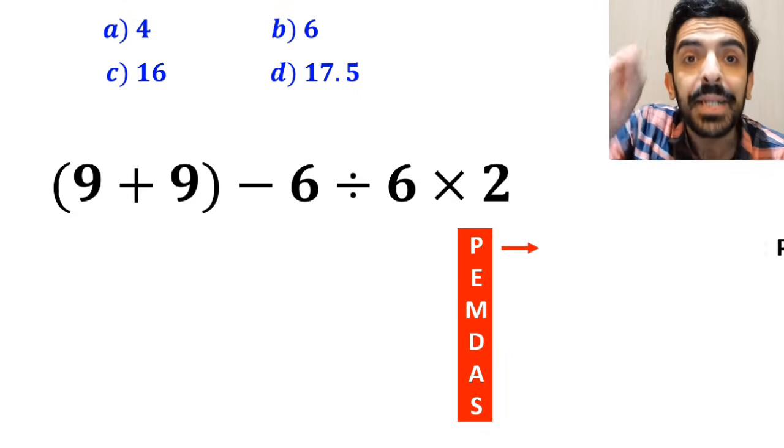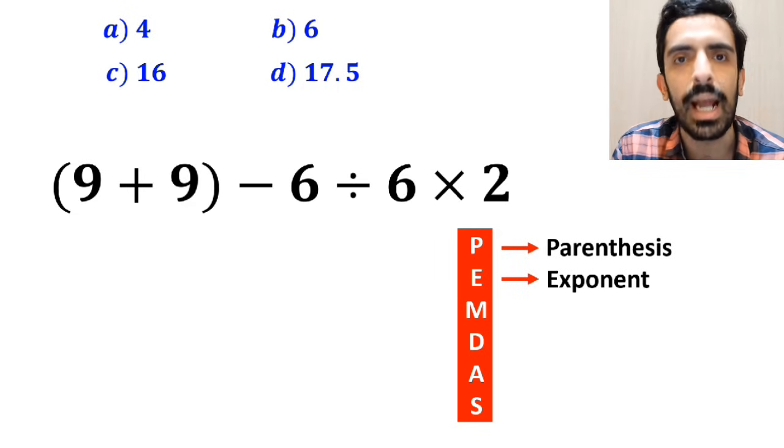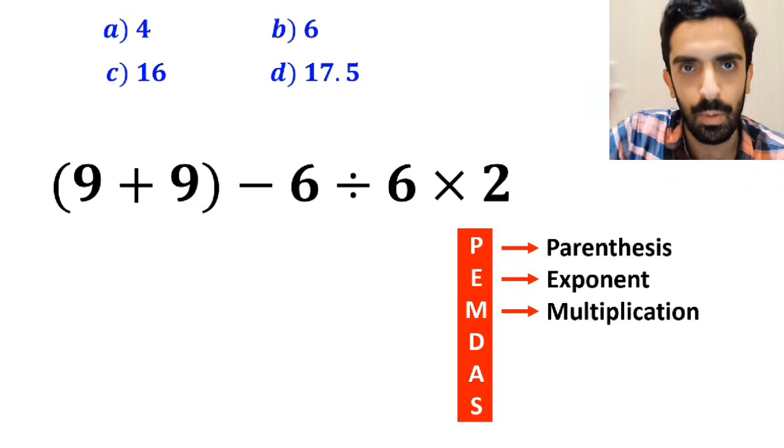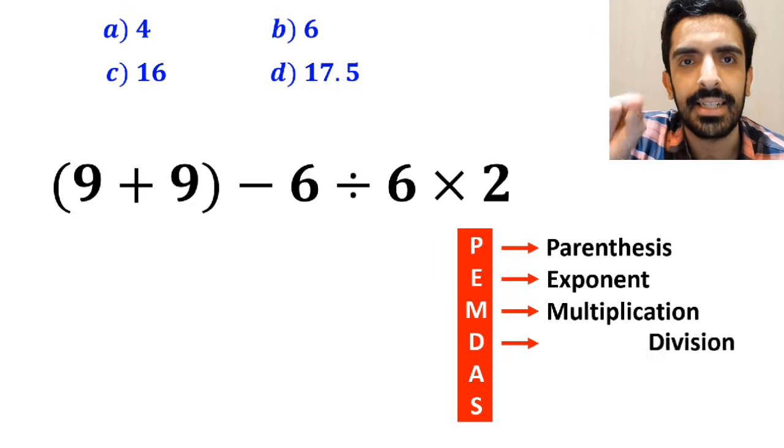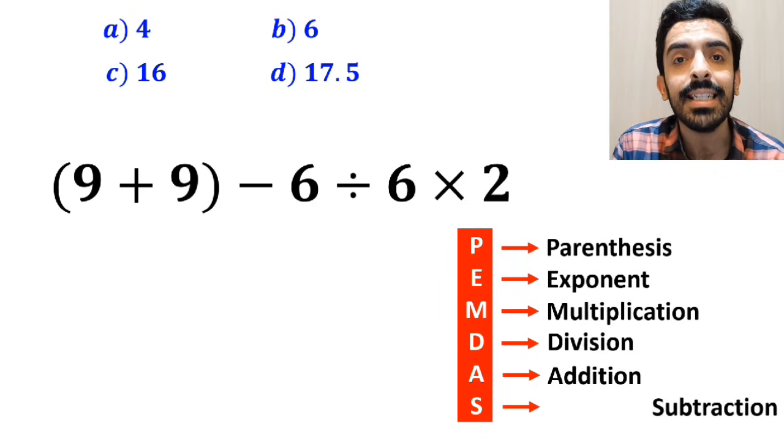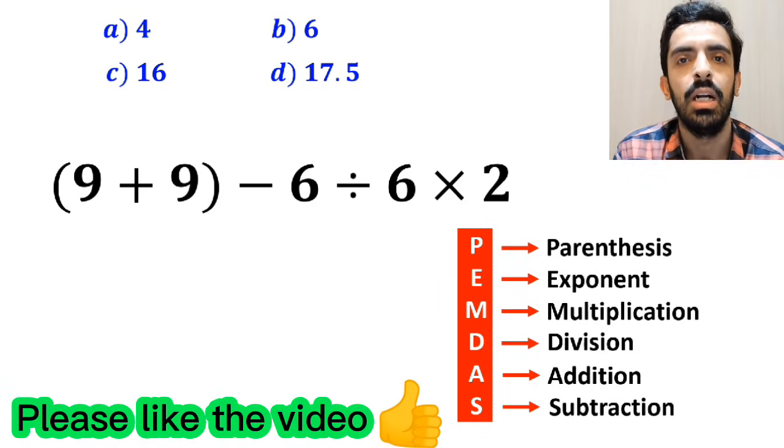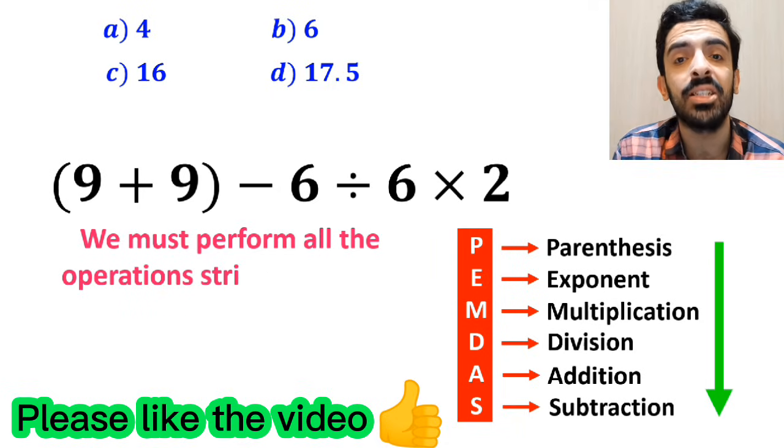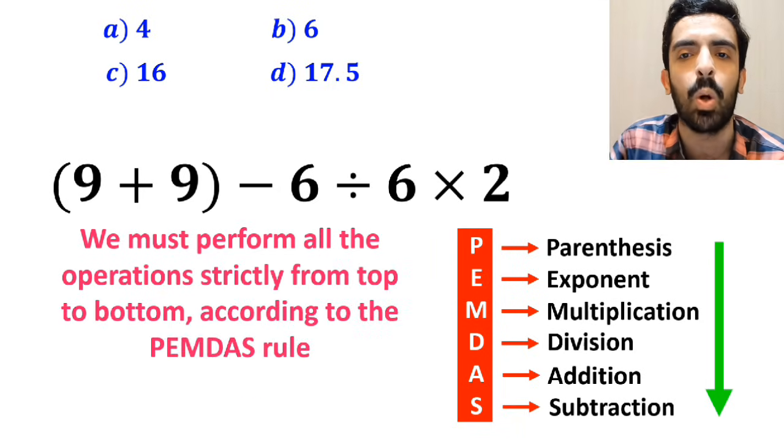In this rule, P stands for parenthesis, E stands for exponent, M stands for multiplication, D stands for division, A stands for addition, and S stands for subtraction. We must perform all the operations strictly from top to bottom according to the PEMDAS rule.